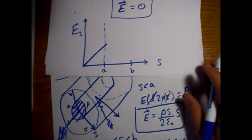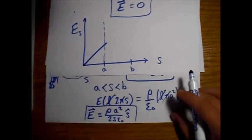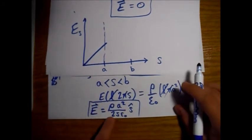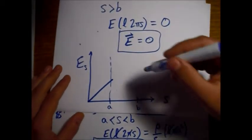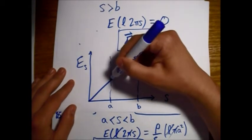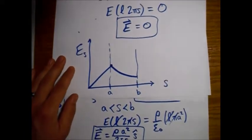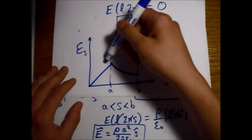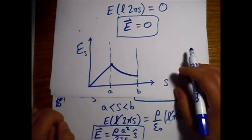That's when we hit the outer edge of our inner cylinder. Now we're into this equation here. Rho's a constant, A's a constant, two's a constant, epsilon not a constant. We just have one power of S on the bottom, so we have an inverse, just a 1 over S type curve. Just this nice decrease here.